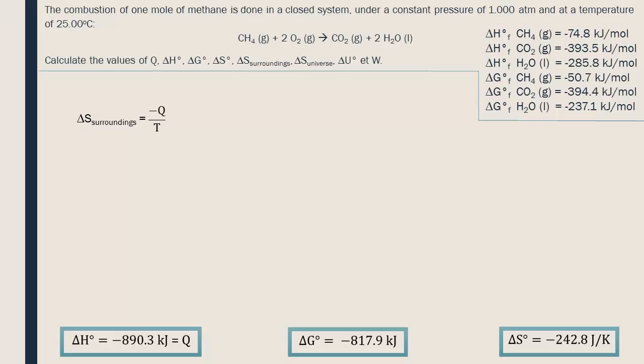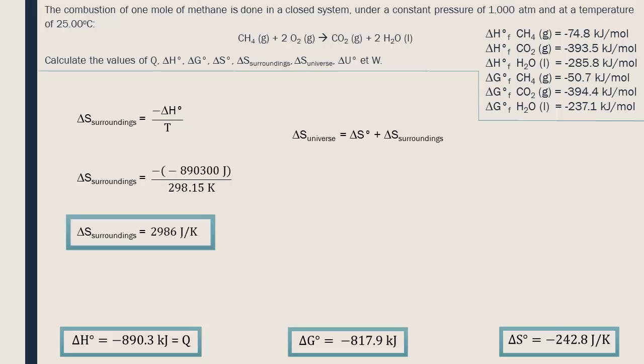Since the reaction is at constant pressure, Q is equal to the enthalpy variation. Note that the calculation for the previous delta S was different and took into account delta G. The entropy variation of the universe is equal to the variation of the disorder going from reactants to products, delta S, plus the heat released to the environment, delta S for the surroundings. This formula is not going to be given, it's something you must figure out.